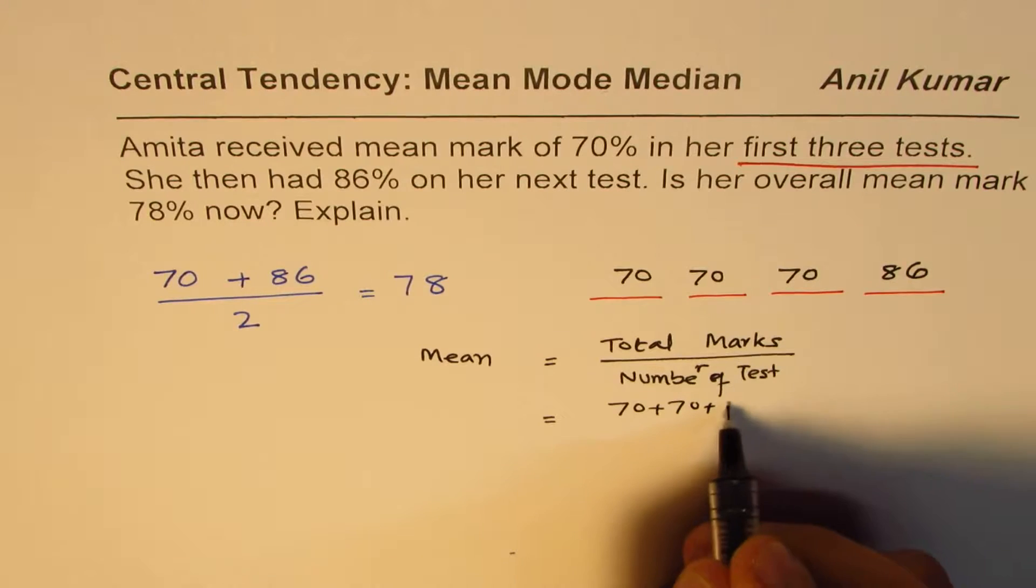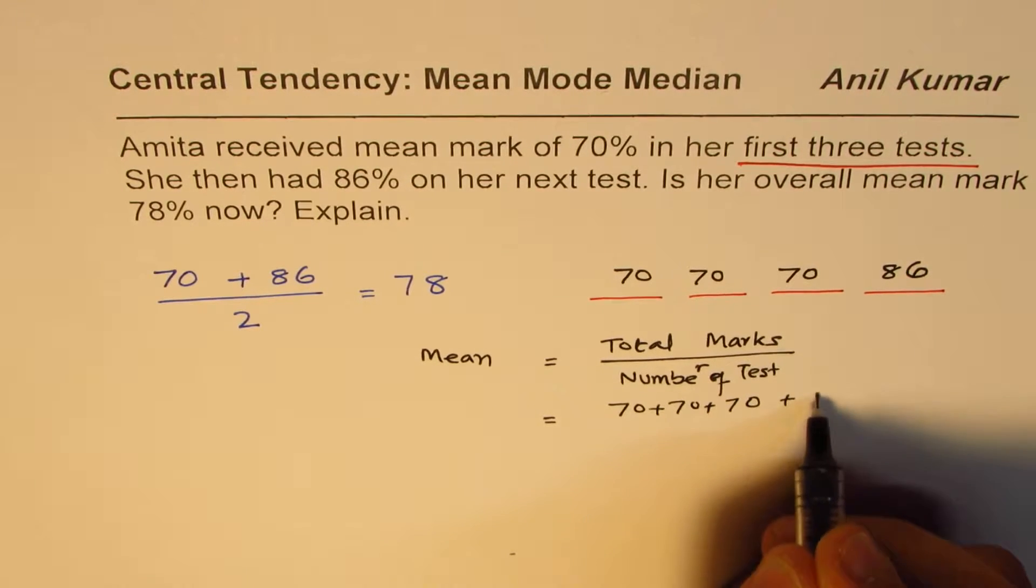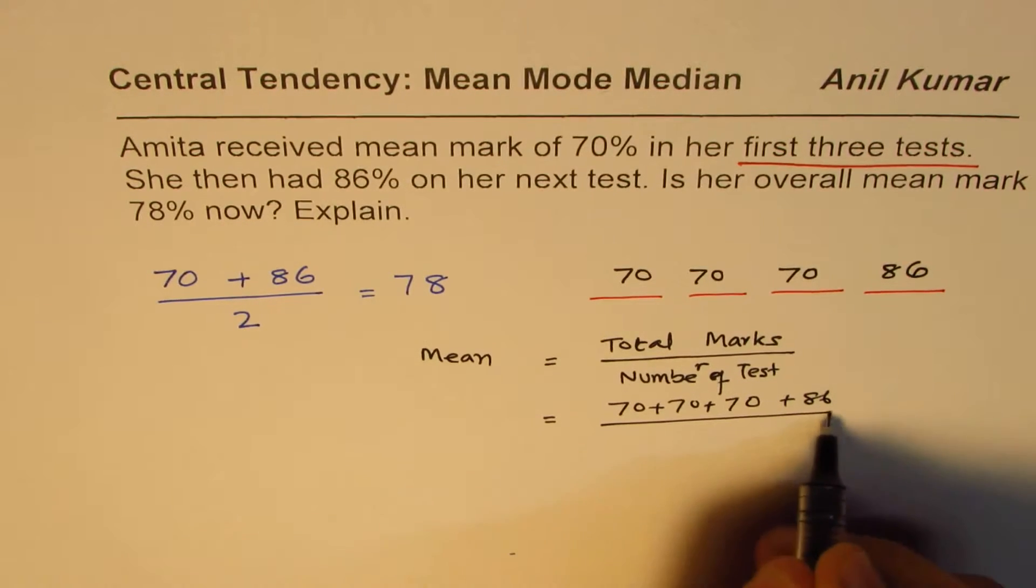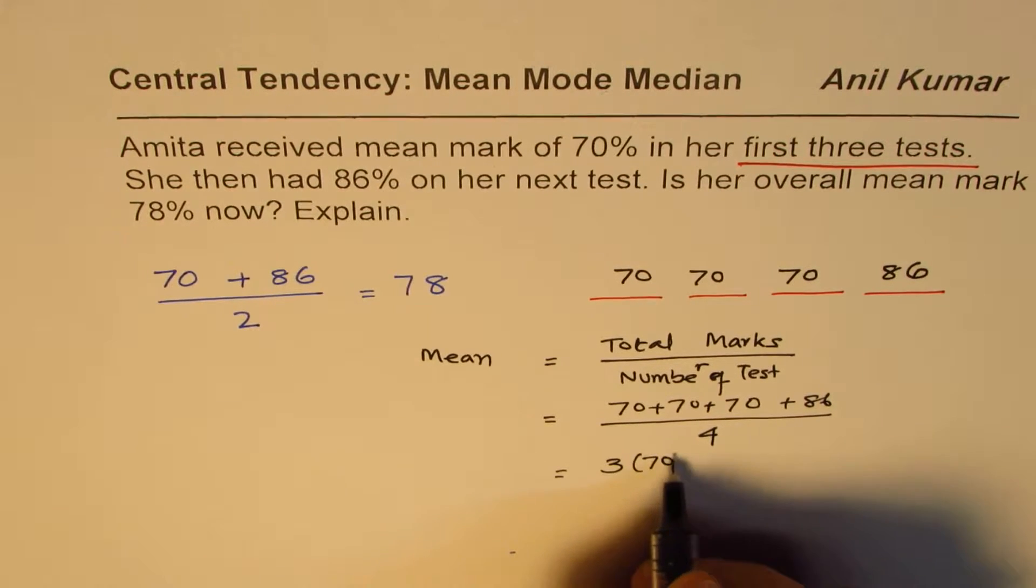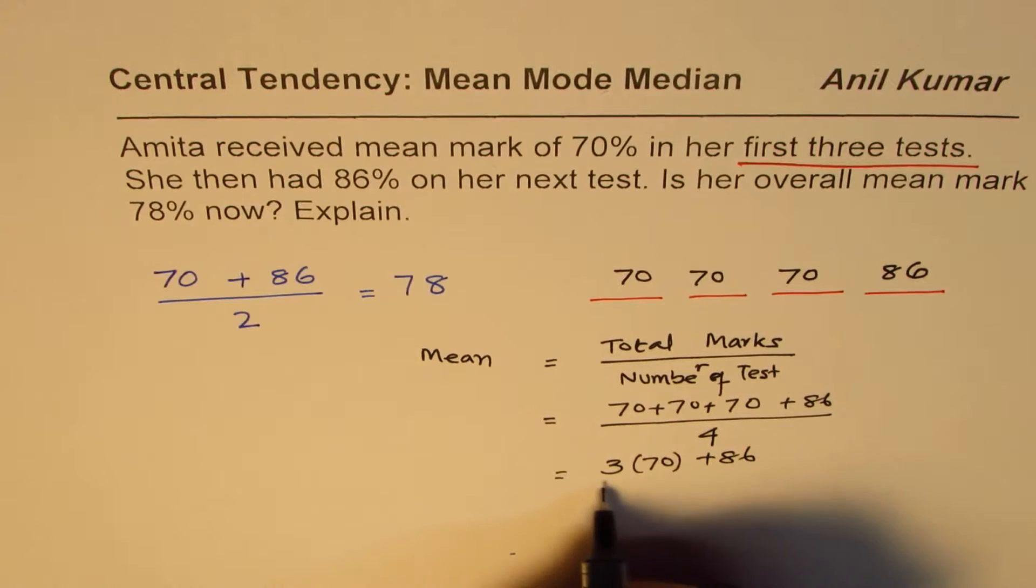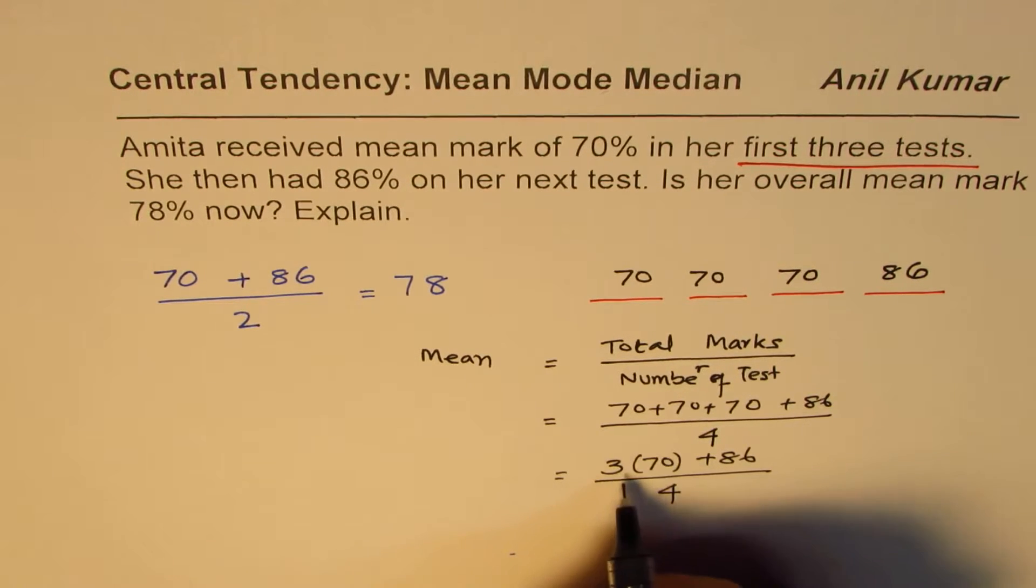So it should be 70 plus 70 plus 70 plus 86, or 3 times 70 plus 86 divided by 4. You should do like this: 3 times 70 plus 86 divided by 4. When mean is 70, then sum of marks in 3 tests is 3 times 70.